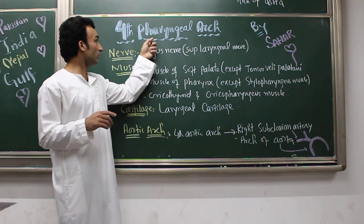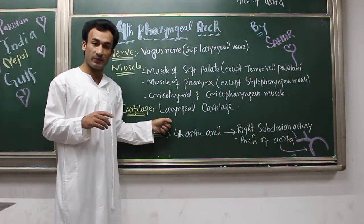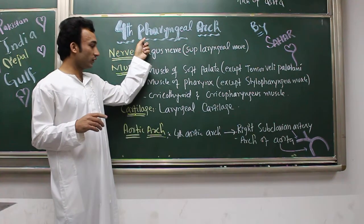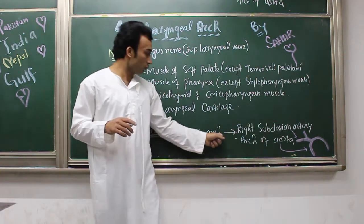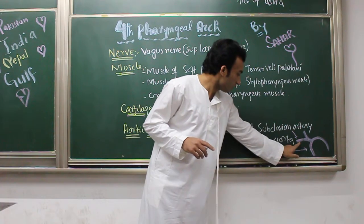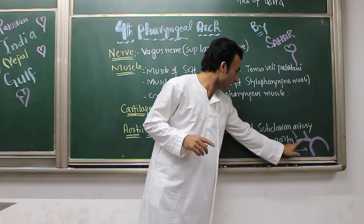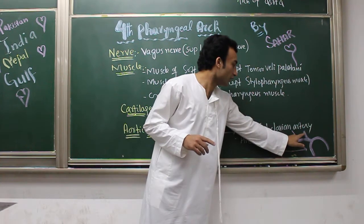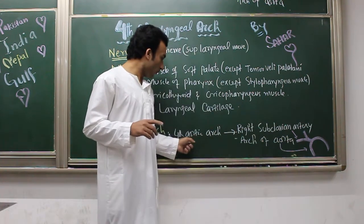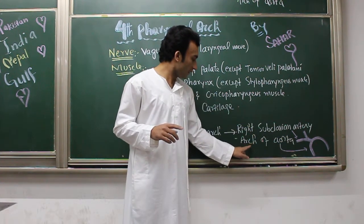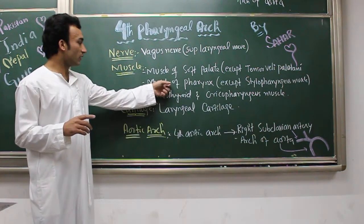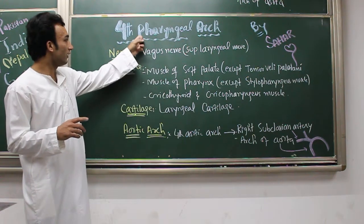The cartilage of the fourth pharyngeal arch: laryngeal cartilages are derived from both the fourth and sixth pharyngeal arches. Regarding the aortic arch component of the fourth pharyngeal arch — it is the fourth aortic arch, and it gives rise to the arch of the aorta and the right subclavian artery. This is the arch of the aorta, this is the right subclavian artery, and this is the right common carotid artery.